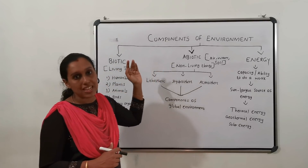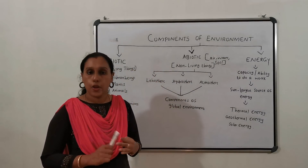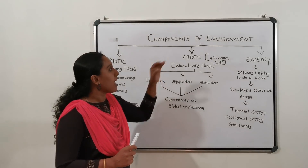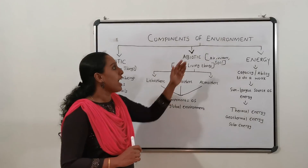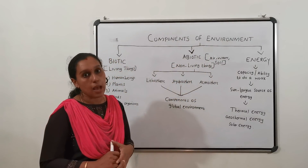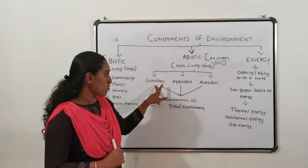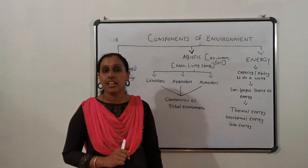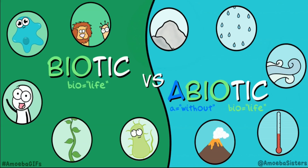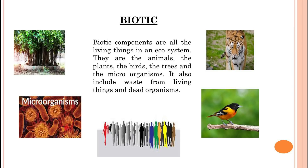The components of environment are biotic, abiotic and energy. Biotic means the living things in our environment — for example, human beings, plants, animals, trees, etc. Abiotic means the non-living elements in our environment — for example, air, water, soil. We can mainly divide abiotic elements into three: lithosphere, hydrosphere and atmosphere. Biotic components are all the living things in an ecosystem — the animals, plants, birds, trees and microorganisms. It also includes waste from living things and dead organisms.